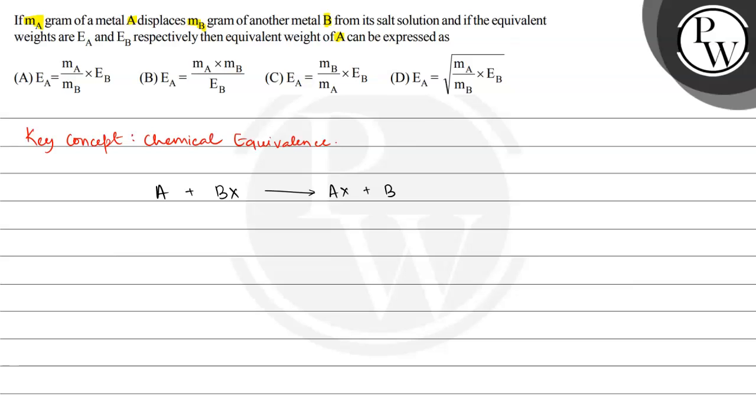The amount of metal A is ma grams, and the metal B that deposits after the reaction is mb grams.